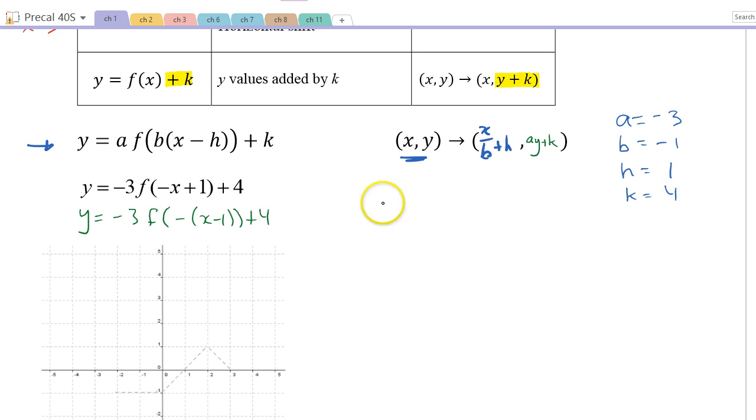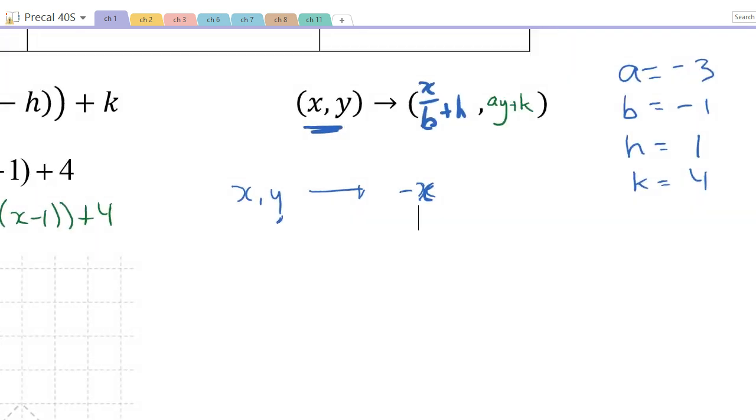All right, so any original point, x comma y on my graph, on my parent, that's going to get mapped onto, I'm going to replace this b with a -1. So it's going to be x divided by -1, which is the same thing as saying -x. Plus h, so plus 1. Now ay, a is -3, so it'll be -3y plus k, which is plus 4.